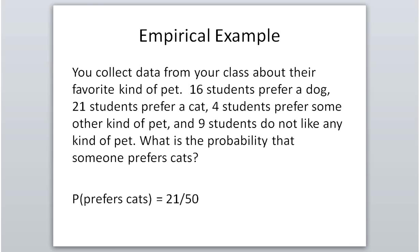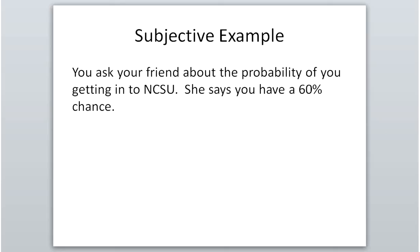An empirical example: data collected from class about favorite pets — 16 students prefer dogs, 21 prefer cats, 4 prefer other, and 9 don't like any. The probability someone prefers cats is 21 out of 50 total responses (16 + 21 + 4 + 9 = 50). A subjective example: asking a friend about your chance of getting into NC State and she says 60% — she's not an admissions officer, just guessing. That's subjective.